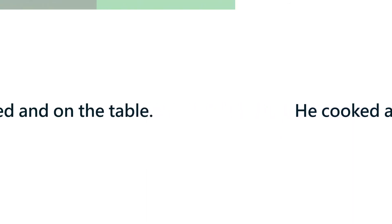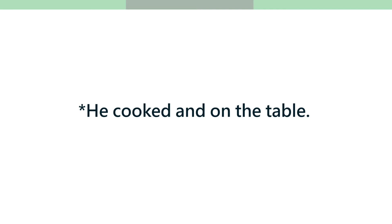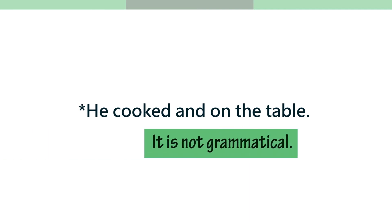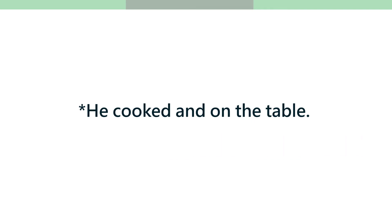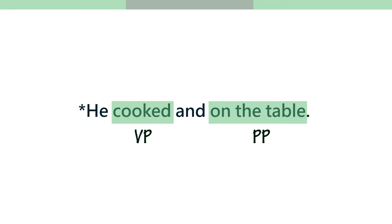If I said 'He cooked and on the table,' why is that sentence ungrammatical? What is the technical language to explain the ungrammaticality? 'On the table' is a prepositional phrase — you cannot coordinate it with a verb phrase.